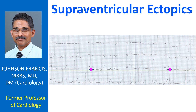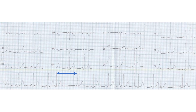Supraventricular ectopic beats originating in the atrium or upper part of the AV junction have P waves preceding the QRS complexes, but these may be submerged in the T wave of the preceding beat. Mid-junctional beats have their P waves within the QRS complex and hence obscure. In a low junctional rhythm, inverted P waves can be seen after the QRS with a short RP interval. In the current tracing, no definite P waves belonging to the ectopic beat are discernible.